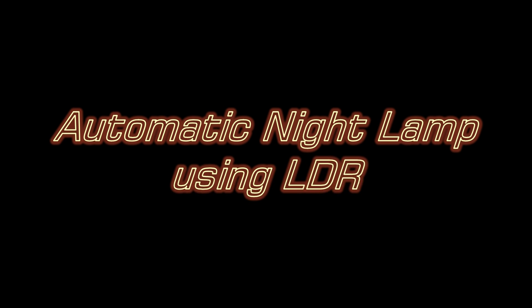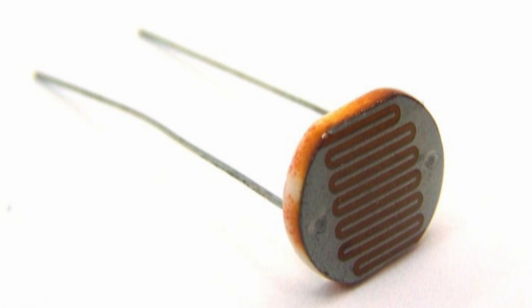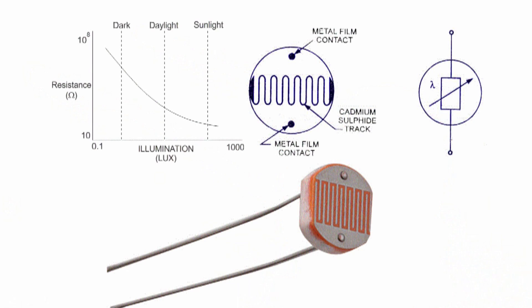Hi everybody. Today we are going to make an automatic night lamp using LDR. LDR is the abbreviation of light-dependent resistor. Resistance of LDR decreases as the intensity of light increases.